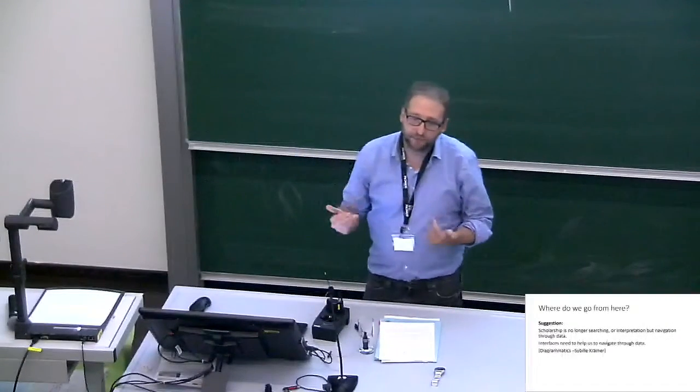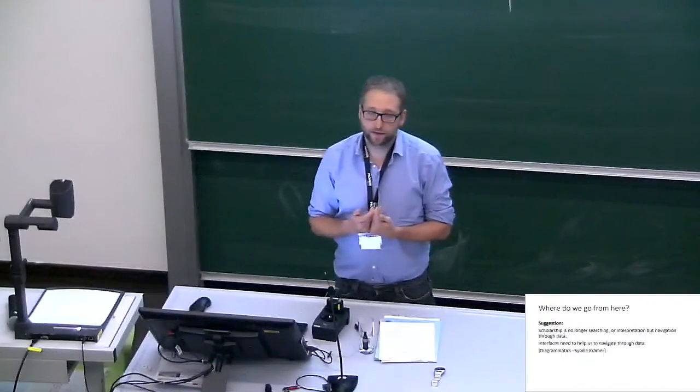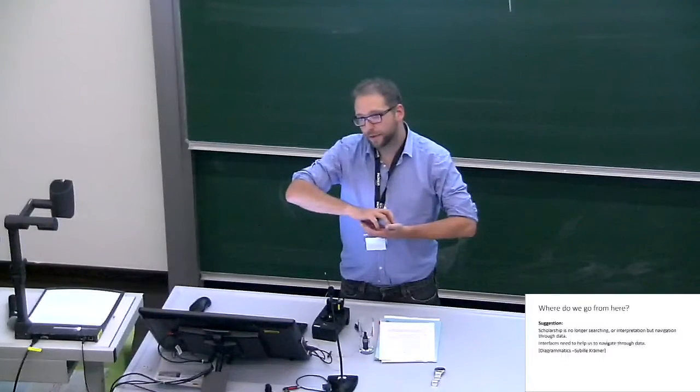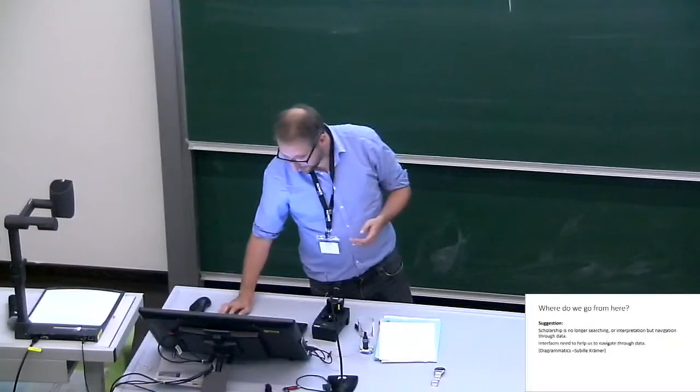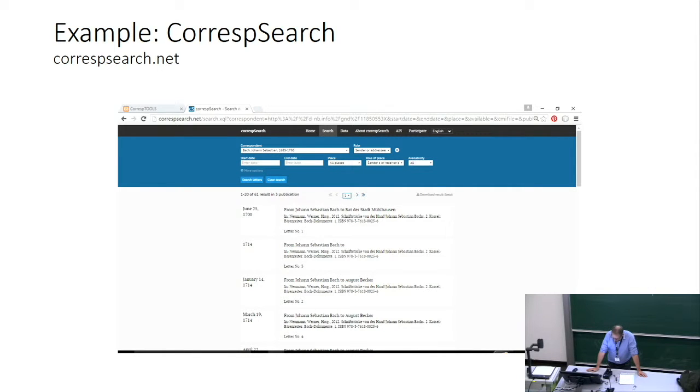Due to the short time, I cannot elaborate that, but the idea that I find very helpful is Sybille Krämer, she is a German philosopher, and she thought a lot about the operational functions of writing, of mathematical writing, but also of alphabetic writing. And she works a lot with the term diagrammatics. That basically means that you have structures that organize data and knowledge. And how can that look like? I give you, as a conclusion, a brief example of what I actually mean by navigating through data.